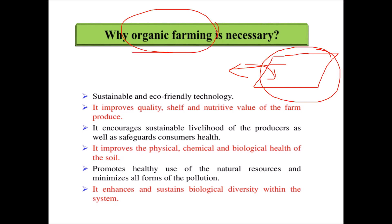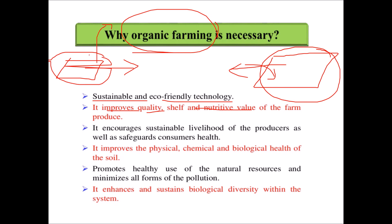So what is organic farming giving us? Firstly, it is a sustainable and eco-friendly technology which is not harming the environment. Second, it is improving the quality, shelf life, and nutritive value of the farm produce. If a field is using only organic means — organic manures, weed control without chemicals, and insect and disease management without chemicals — the quality of produce from that field will be enhanced.